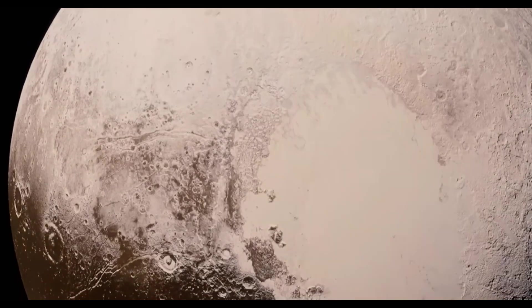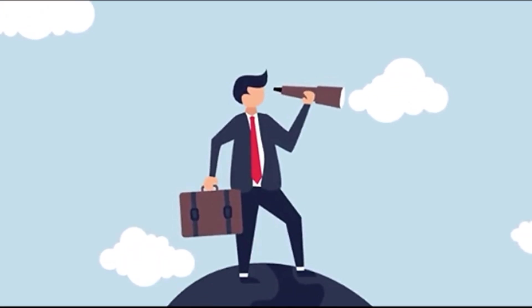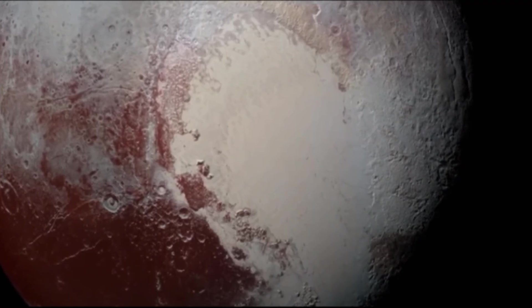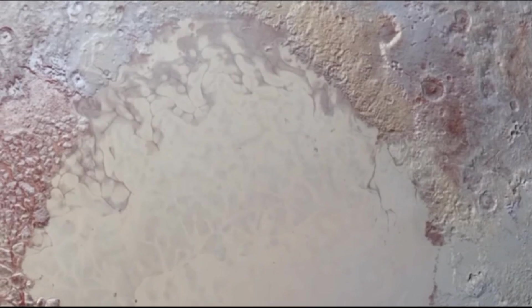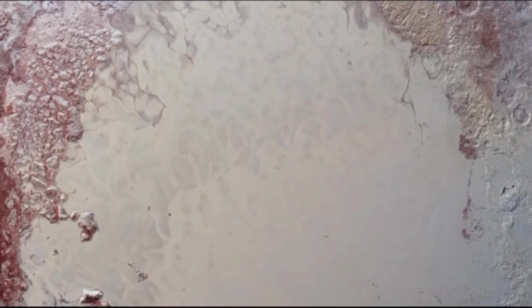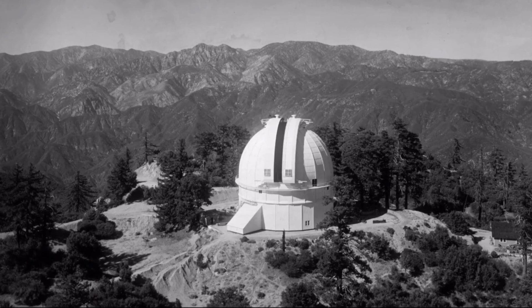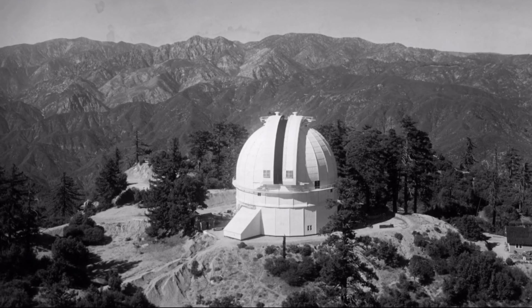In 1906, at the initiative of Percival Lowell, who founded the observatory of the same name, systematic searches for this mysterious Planet X began. Lowell did not live to see the discovery, passing away in 1916, and the initial searches yielded no results. Interestingly, a potential candidate was recorded on photographic plates as early as 1915, but was not identified as a planet. Even in 1919, Pluto appeared several times on the plates at the Mount Wilson Observatory, but remained unrecognized. Why? I'll tell you a little further.